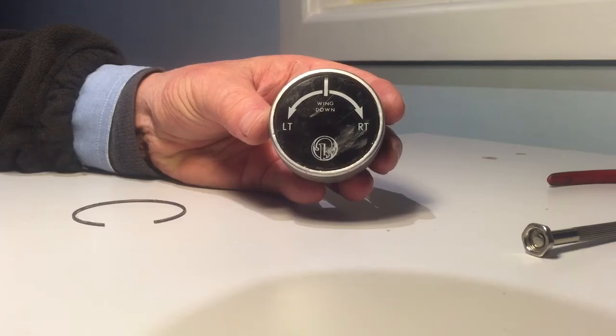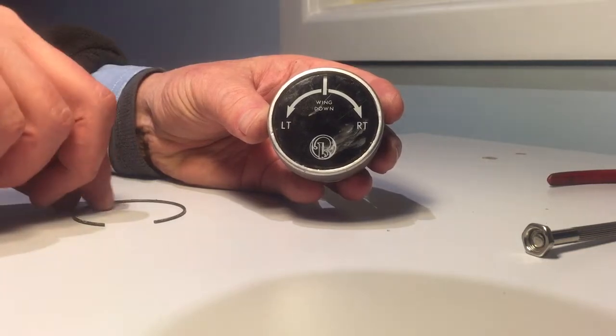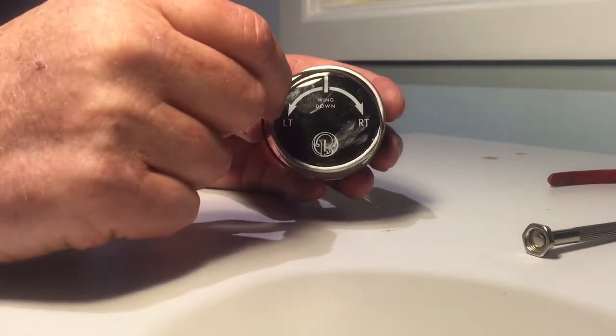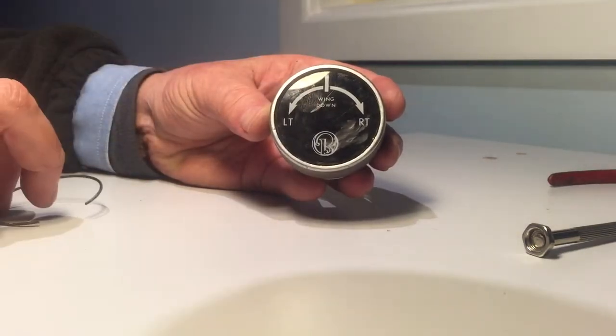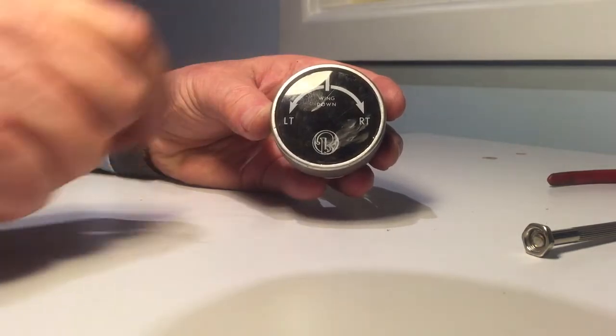Okay, so here's part two of the Beechcraft trim knob mechanism. I've removed this clip that holds the front placard in, so once you've removed that, that just falls out.